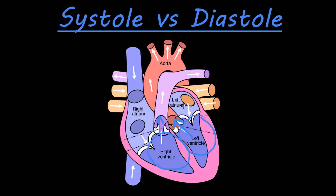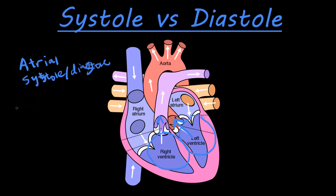It also goes into subcategories, so you might see more distinctions of atrial systole, atrial diastole, and then ventricular systole or diastole. Atrial systole is still going to be contraction — contraction of the left and right atrium — and then diastole is relaxation, allowing it to fill with blood again after we have contracted.